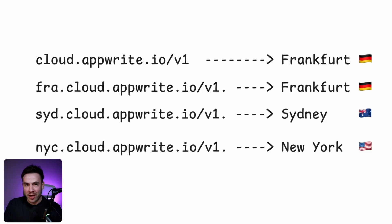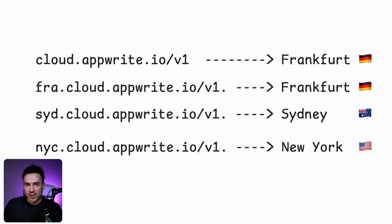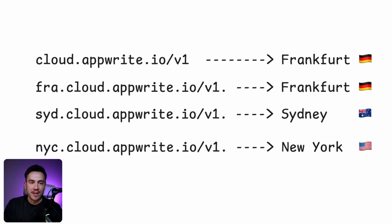For those of you worried about backwards compatibility for your current projects — if you're still using the original endpoint, that one's going to point back to Frankfurt, Germany, so you're not going to be affected. Technically, we're going to have four different endpoints: FRA pointing to Frankfurt, SYD pointing to Sydney, NYC pointing to New York, and the original endpoint just pointing back to Frankfurt.